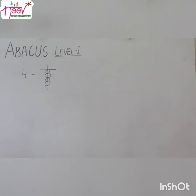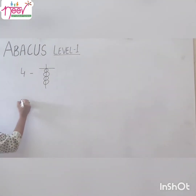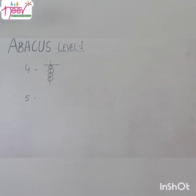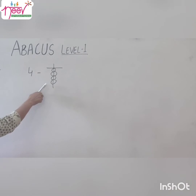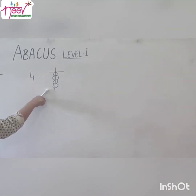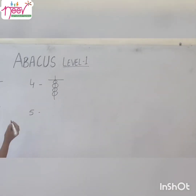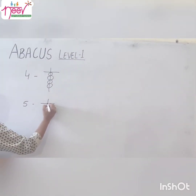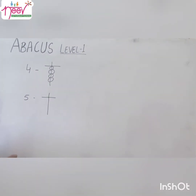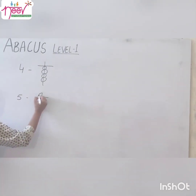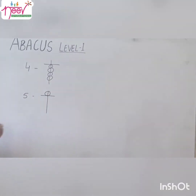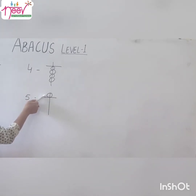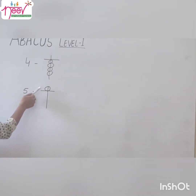Now we want to show how to make 5. We have only 4 beads on our previous rod. So how to make 5? We will make 1 straw. Our upper bead value is 5, so we will place the upper bead over here. This is our value 5.